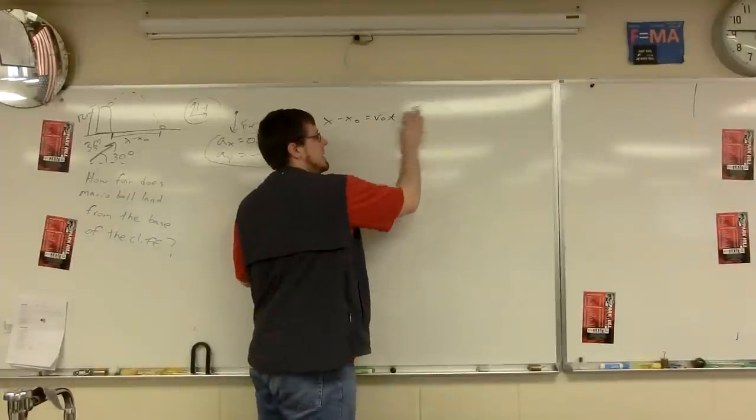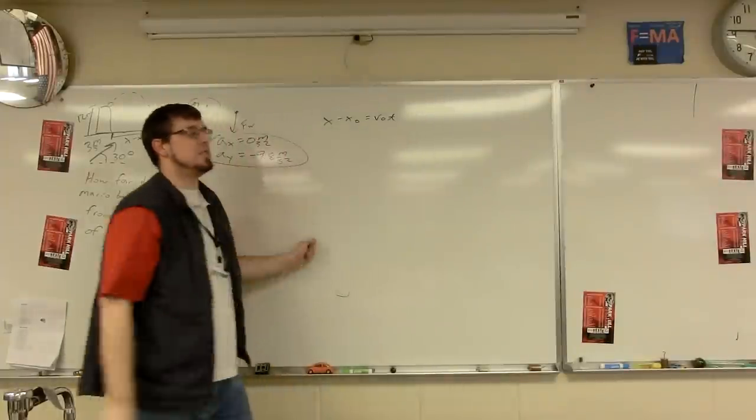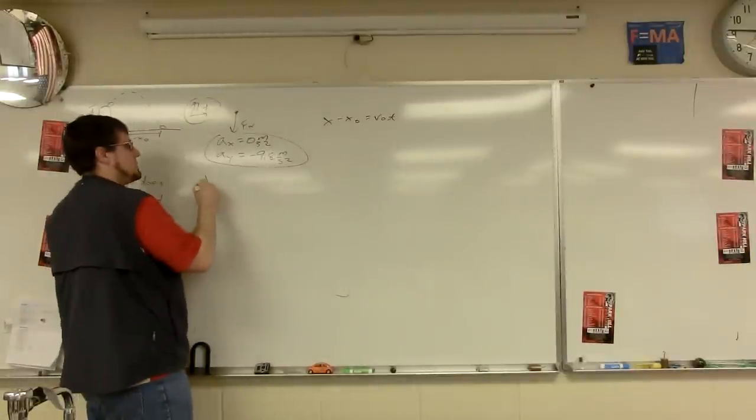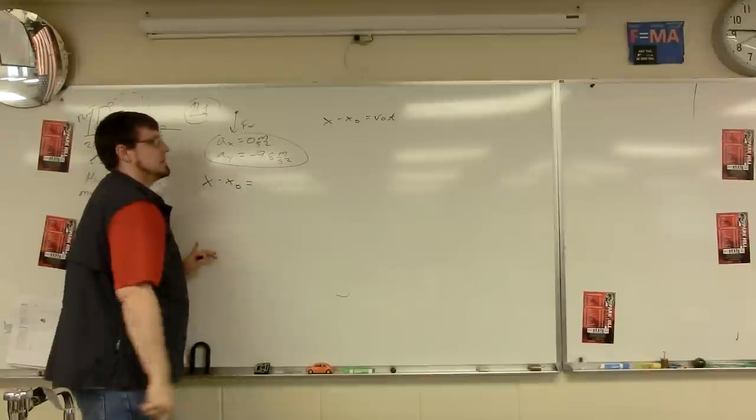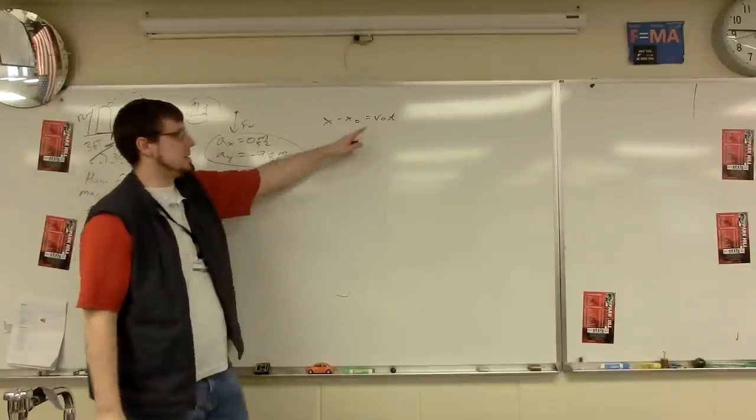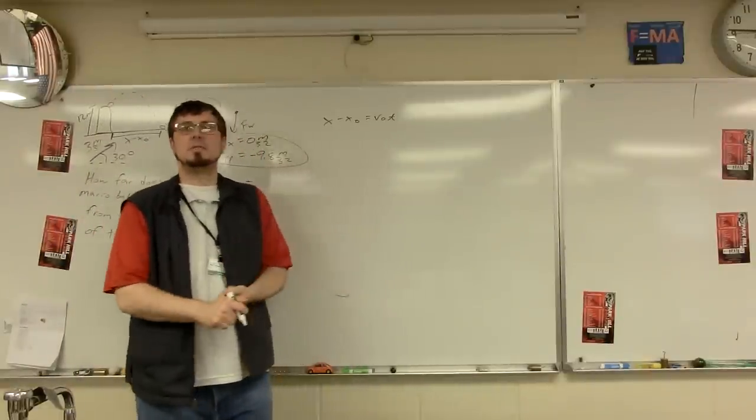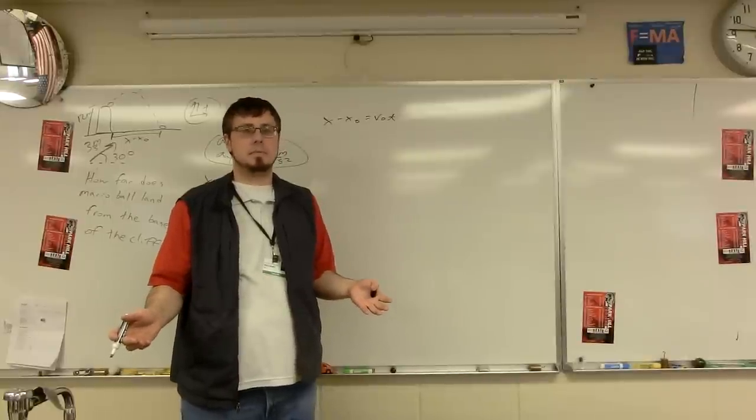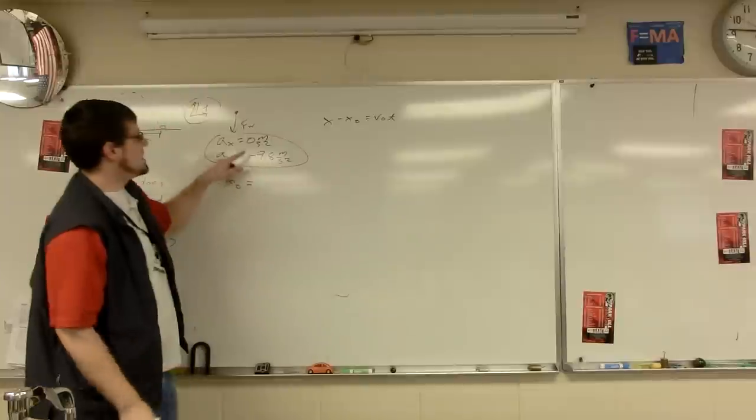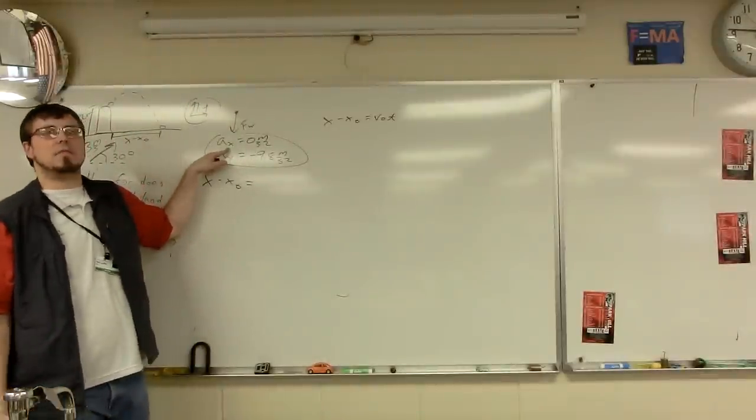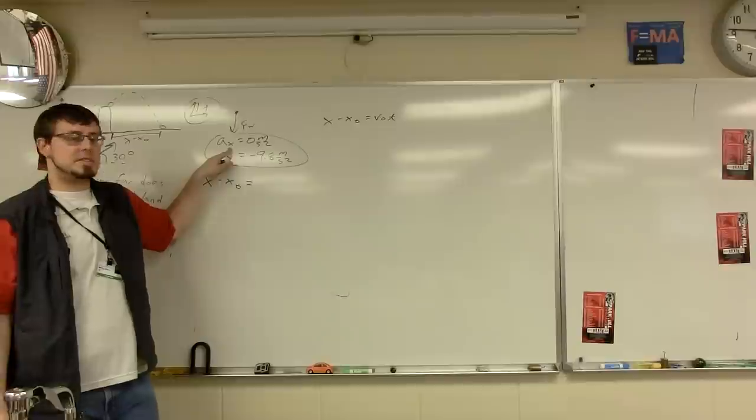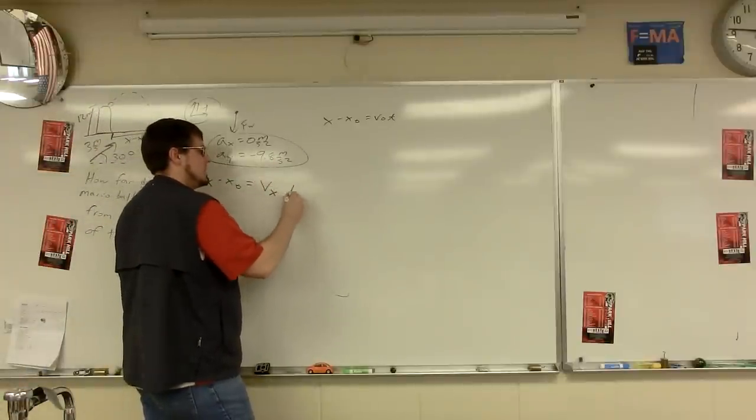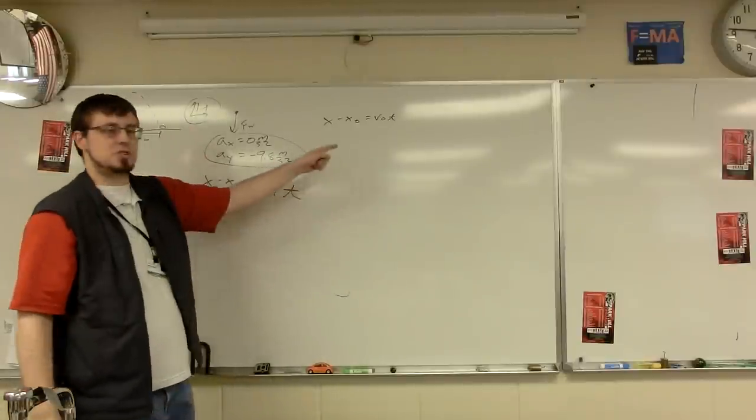So what you'll be left with is just X minus X naught equals V naught T for the X direction. I'm going to rewrite that over here just for space, and I'm going to change it a little bit. Instead of writing V naught, well if the acceleration is zero, is the initial velocity, the mid velocity, and the final velocity all going to be the same in the X direction? Acceleration is zero, which means in the X direction our velocity will stay the same. So instead of writing V naught, what I like to do is just write VX times T.